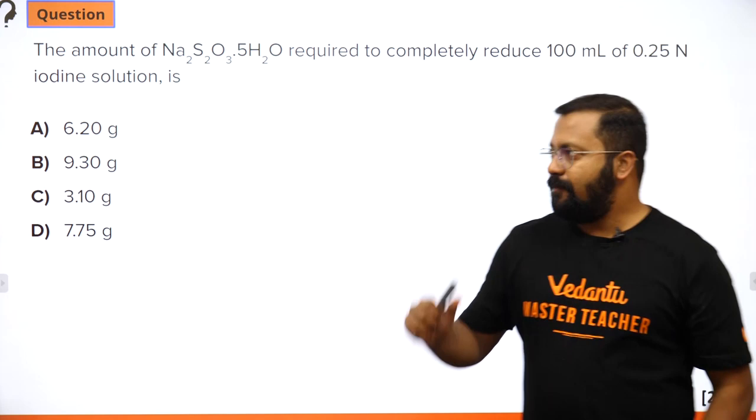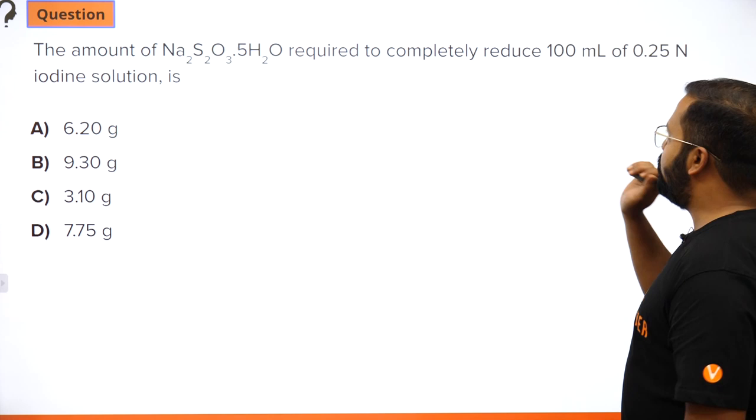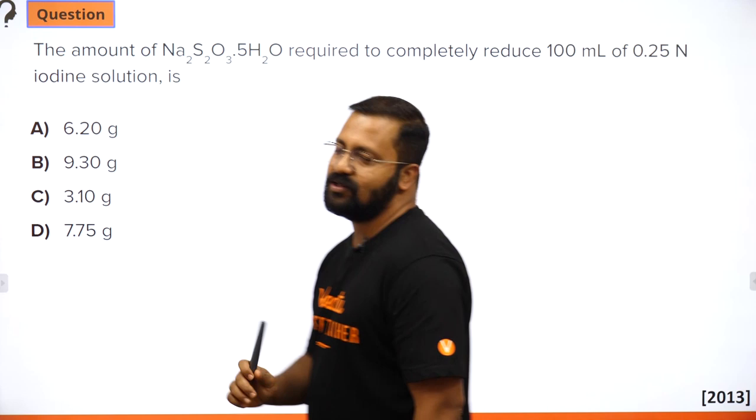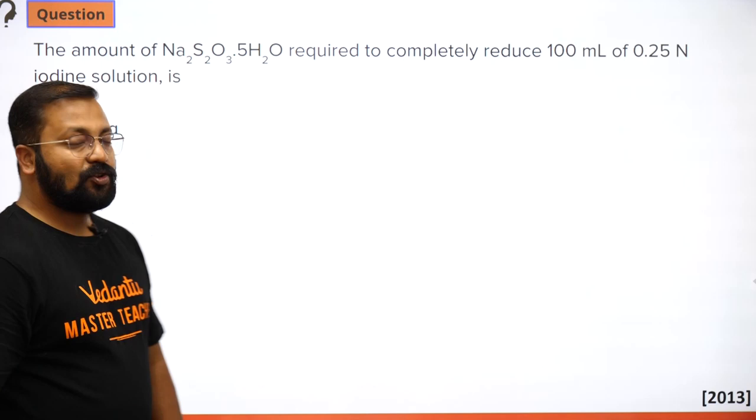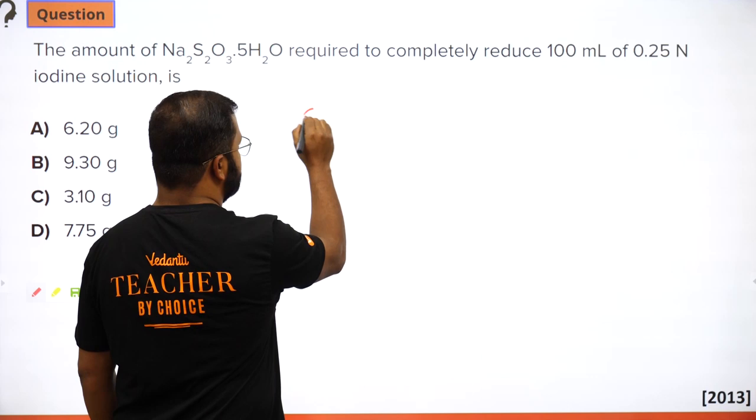Next question: the amount of Na₂S₂O₃·5H₂O required to completely reduce 100 mL of 0.25 N iodine solution. First you need to know the reaction.